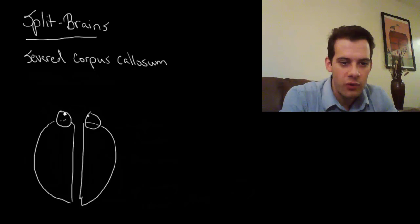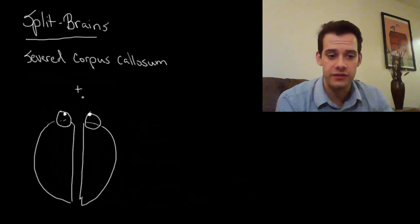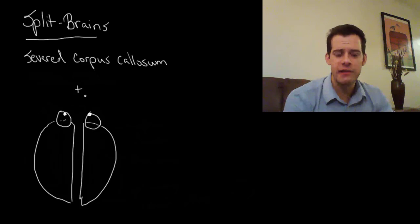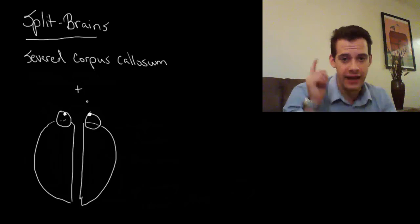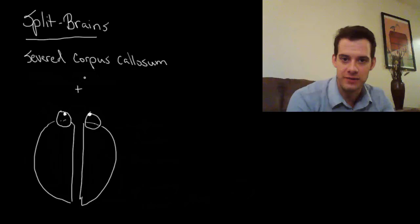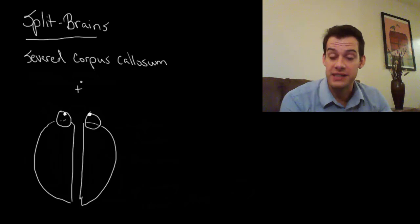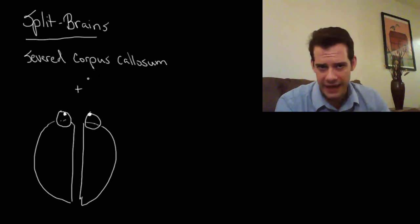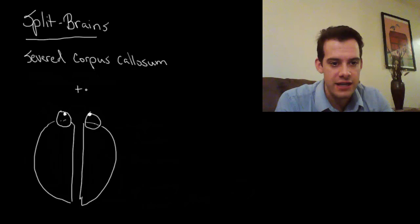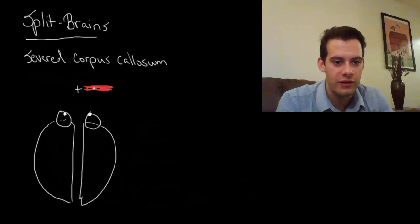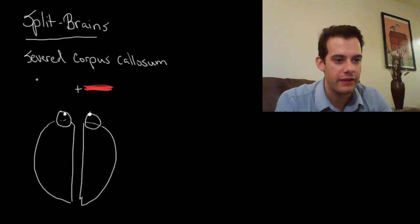So the important thing about the eyes is that they process information by visual field. What this means is they're not contralateral the way the rest of the body is. It's not the case that the left eye goes to the right hemisphere or the right eye goes to the left hemisphere. That's not true. It's a common mistake that students make, so banish that from your mind. And what we'll see is it's divided by visual field.